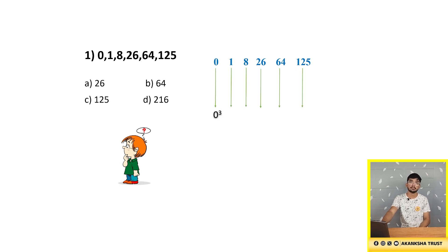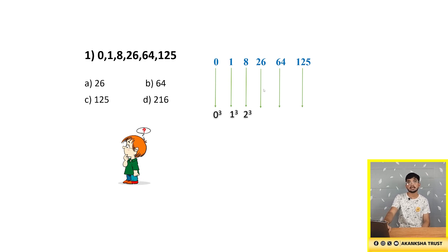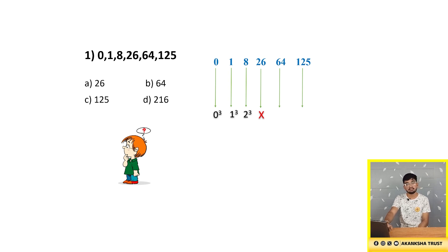The first number is 0 — 0 cubed is 0. Next, 1 cubed is 1. The next number is 8, which is 2 cubed: 2×2×2 = 8. The next number is 26, but it must be 27 because 3 cubed is 3×3 = 9, and 9×3 = 27. The given number 26 does not follow the pattern, so the wrong number is 26.